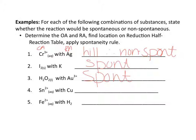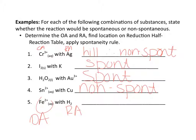The third example is non-spontaneous. For Fe2+, it exists as both an oxidizing and a reducing agent. Because hydrogen is found at 0 as the reducing agent, Fe2+ must be the OA in this case. It is lower, so this is again non-spontaneous. Make sure you take the time to do each of these examples yourself, find these on the table, and get comfortable with this idea.